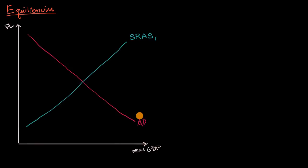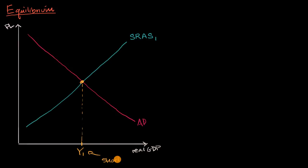I could also look at other potential aggregate demand curves, but let's just do that for now. Given these curves, what would be the price level and the level of output for this economy? Well, very naturally, it would be the output and the price level that corresponds to the point of intersection. And that would be our short run equilibrium output — where the short run aggregate supply intersects the aggregate demand curve. This right over here would be our equilibrium price level. Let's call that PL one.